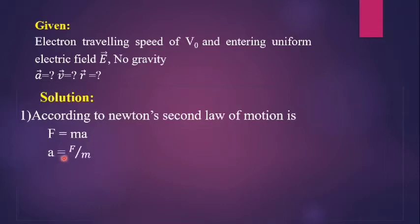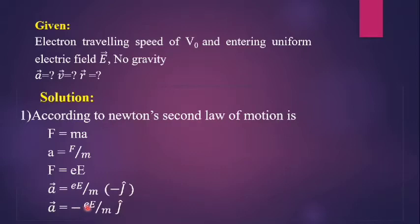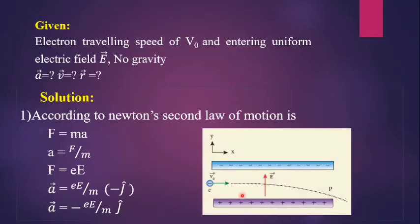Here the force is nothing but the electric force. The electron moving in a uniform electric field experiences an electric force equal to eE. The acceleration can be written in vector form: a-vector is equal to eE by m into minus j-cap. So the acceleration vector is equal to minus eE by m into j-cap. Now we have a question: how do we get the minus j-cap in this equation?